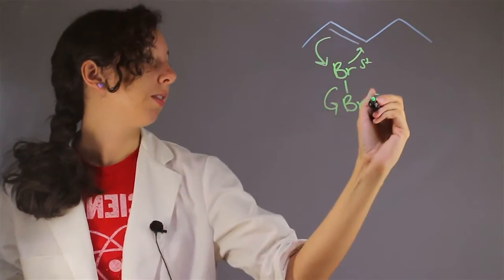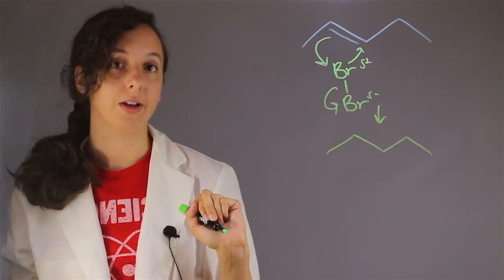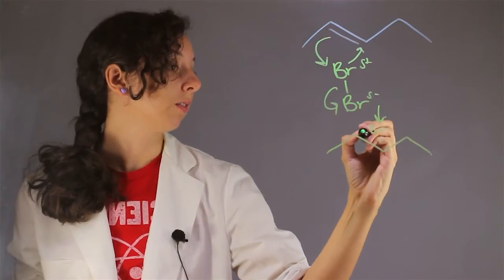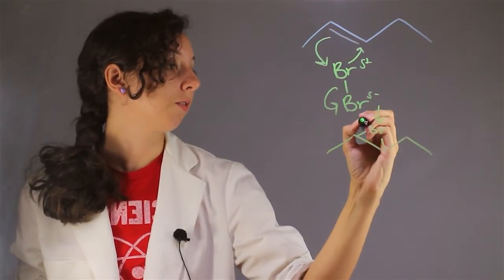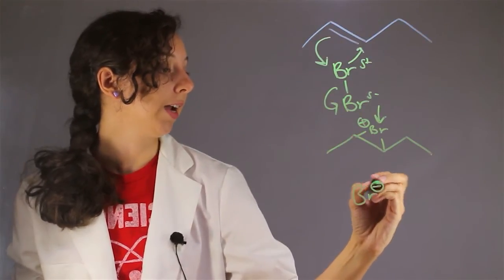So the intermediate is that we have still our five carbon backbone here. We have a bromine that now has a full positive charge. Our other bromine, this guy, is just hanging out being fully negative.